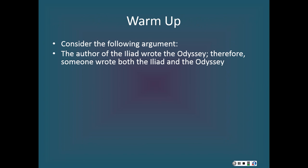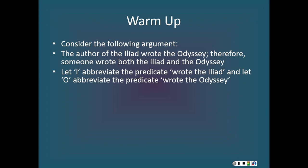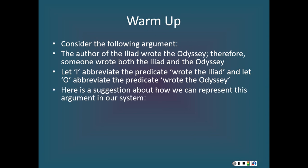This argument is self-evidently valid, and we do have a way of representing its validity in our system, if we take for granted a certain way of translating the claim that the author of the Iliad wrote the Odyssey. Let I abbreviate the predicate 'wrote the Iliad,' and let O abbreviate the predicate 'wrote the Odyssey.' Here is a suggestion: there exists an X such that X wrote the Iliad, and for any Y, if Y wrote the Iliad, then Y is identical to X, and X wrote the Odyssey. Therefore, there exists an X such that X wrote the Iliad and X wrote the Odyssey.